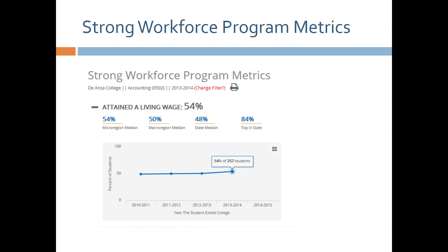For any metric, clicking the plus sign shows comparison data. The folks at De Anza could see how they're doing compared to their region, or compared to the state, or even to the top college in the state. Mousing over that 84 percent would identify that top college so you could call them for advice on improving programs. We can also see that De Anza is improving its outcomes for attaining a living wage — impressive given the housing cost pressures in Silicon Valley.